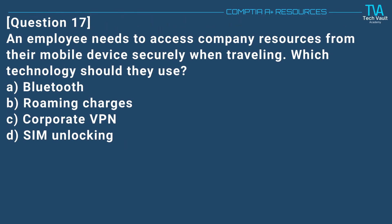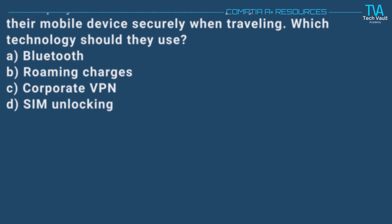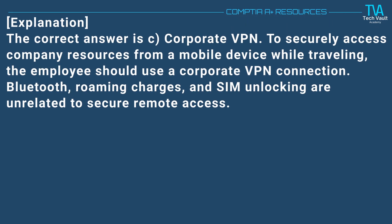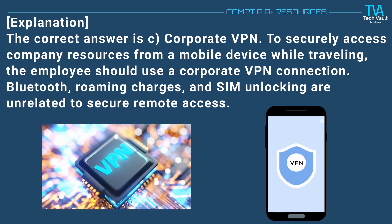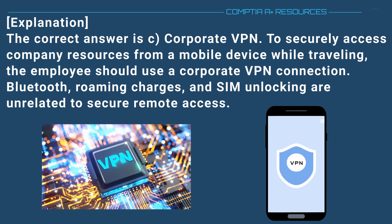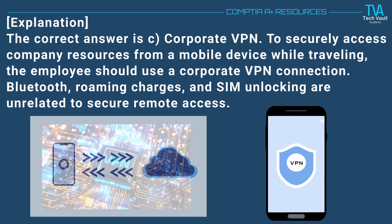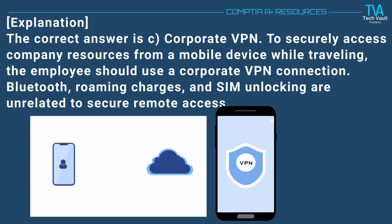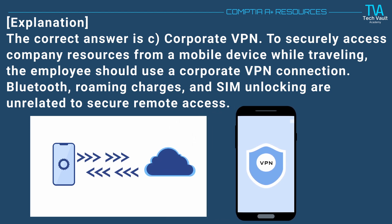Question 17. An employee needs to access company resources from their mobile device securely when traveling. Which technology should they use? A. Bluetooth. B. Roaming charges. C. Corporate VPN. D. SIM unlocking. The correct answer is C. Corporate VPN. To securely access company resources from a mobile device while traveling, the employee should use a corporate VPN connection. Bluetooth, roaming charges, and SIM unlocking are unrelated to secure remote access.